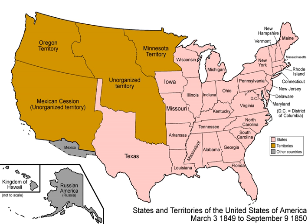The Compromise, drafted by Whig Senator Henry Clay of Kentucky and brokered by Clay and Democratic Senator Stephen Douglas of Illinois, reduced sectional conflict. Inversely, controversy arose over the fugitive slave provision. Although the Compromise was greeted with relief, each side disapproved of some of its specific provisions.